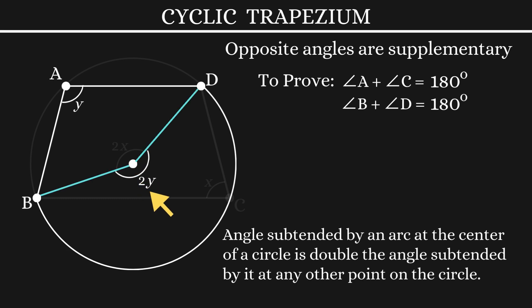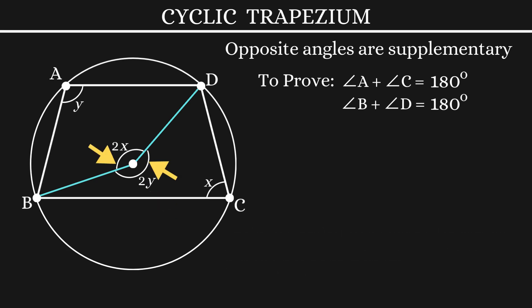Next, if you add 2X plus 2Y, we have 360 degrees. Dividing this entire equation by 2, we have X plus Y is 180 degrees, or angle A plus angle C is 180 degrees. In a similar manner, you can also prove that angle B plus angle D is also 180 degrees.